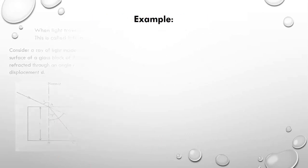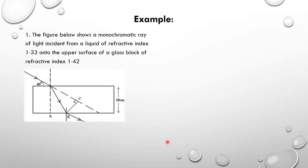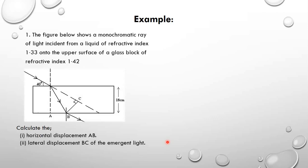Let us look at some examples. The figure shows monochromatic light incident from a liquid of refractive index 1.33 onto the upper surface of a glass block of refractive index 1.42. We need to calculate the horizontal displacement AB and the lateral displacement BC of the emergent light. The angle given is 40 degrees, but since we measure from the normal, we get 90 minus 40, which gives us 50 degrees.